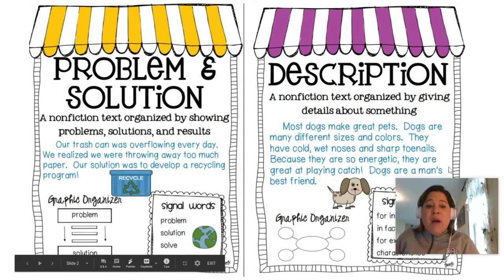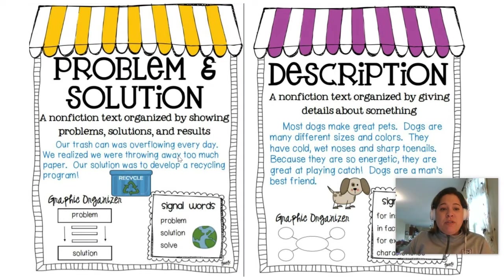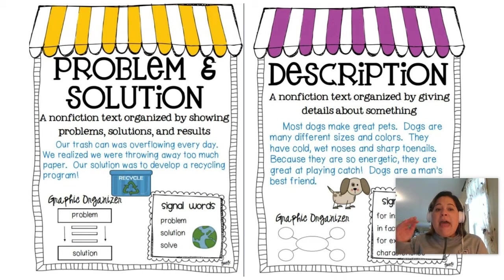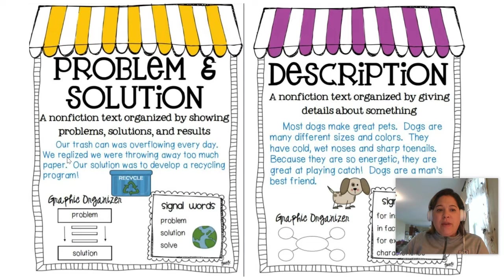So let's start with problem and solution. Problem and solution is just that — it is when the text is organized around a main problem and then different ways to solve that problem. Let's look at this example: our trash can was overflowing every day. We realized we were throwing away too much paper. Our solution was to develop a recycling program. Problem: trash overflowing. Solution: recycling program.